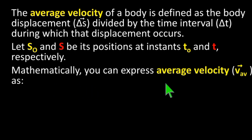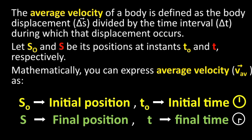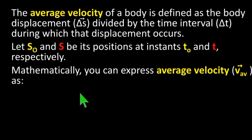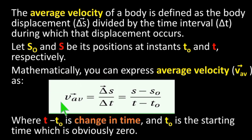Mathematically, you can express average velocity as: average velocity is equal to change in displacement over change in time. Change in displacement means final displacement minus initial displacement.